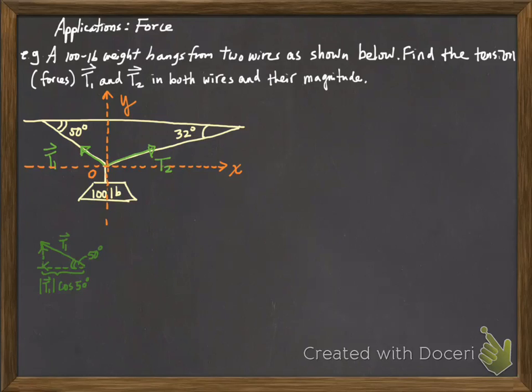Our next step is to break down the problem into pieces. If we focus on the left-hand side of this picture, where we have the T1 vector pointing in a direction, then we can draw a right triangle with the 50 degree angle as indicated in the picture. Notice that the length of the side that is adjacent to the 50 degree angle is given by the magnitude of T1 times cosine of 50. And the length of the opposite side to the 50 degree angle is the length of T1 times the sine of 50.